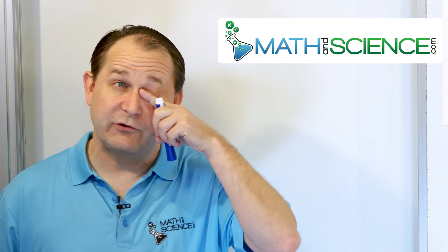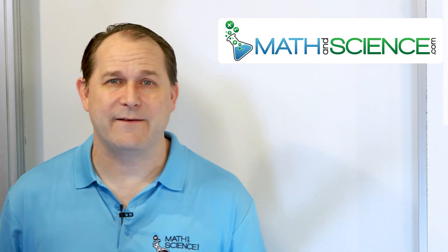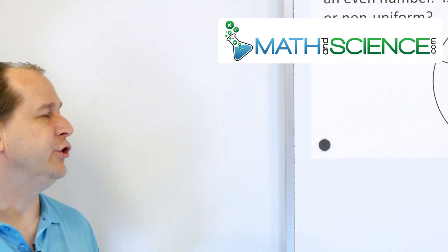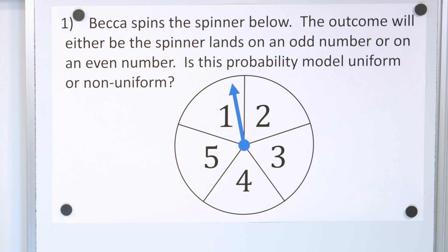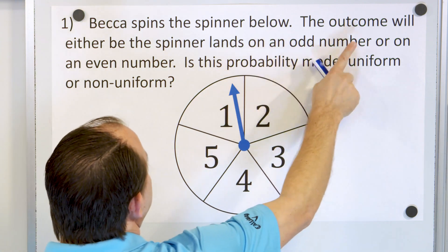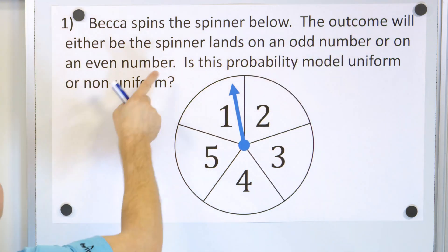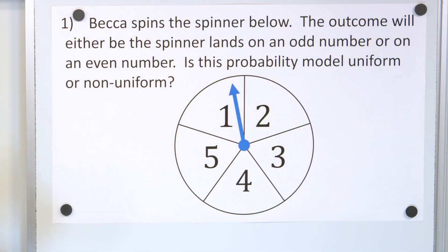Here we're going to be focusing more on non-uniformity. If you have a situation where the outcomes do not have the same likelihood, it's called non-uniform. Let's take a look at this example and see where it falls. Becca spins the spinner below. The outcome will either be that the spinner lands on an odd number or on an even number. Is this probability model uniform?